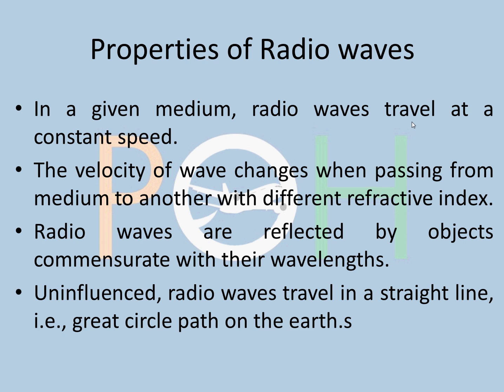Properties of radio waves: In a given medium, radio waves travel at a constant speed. The velocity of the wave changes when passing from one medium to another with different refractive index, like from air to water. Radio waves are reflected by objects that are commensurate with their wavelengths. So if there is an object of a certain size, the radio wave will reflect from that object if their wavelengths are similar to the size of the object. If uninfluenced, radio waves travel in a straight line, basically a great circle path on the earth.